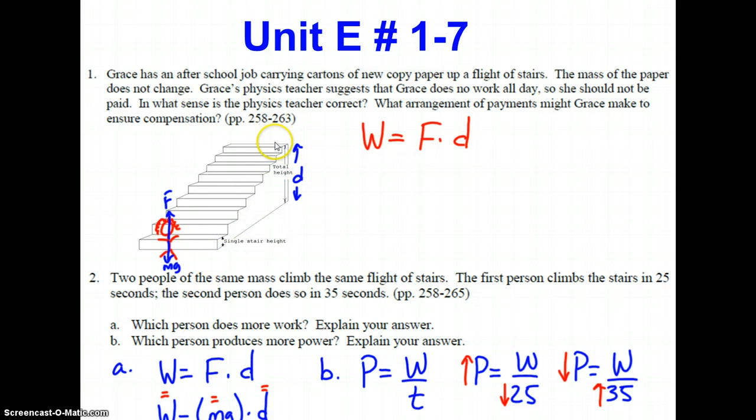Well, for every trip Grace makes up the stairs, she has to make that trip back down the stairs, so her actual total displacement is zero. If her displacement is zero, then F times D is zero, and she's done no work. So what arrangement might Grace make? She might arrange to get paid for every distance traveled up the stairs, rather than her total displacement, which is zero.